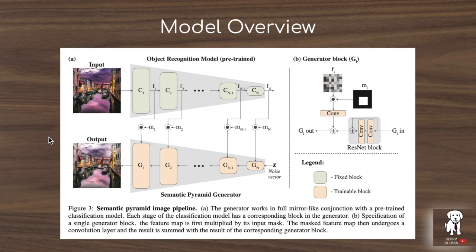This image depicts an overview of the Semantic Pyramid for Image Generation pipeline. The idea is to combine the generative process — going from a random noise vector into a target image in the generator of the GAN framework — but also integrate information from the intermediate features in an image classification network. Papers like neural style transfer and state-of-the-art object detection models like EfficientDet utilize this hierarchical representation of images that arises from the way convolutional classification networks sequentially process the input image.